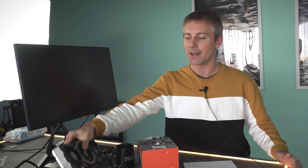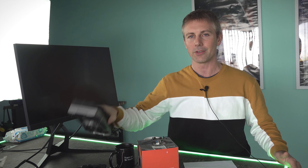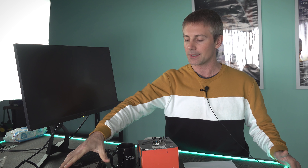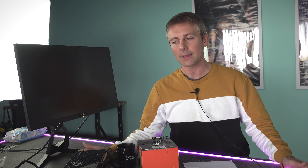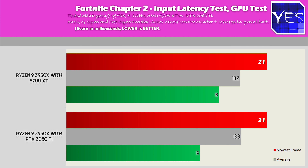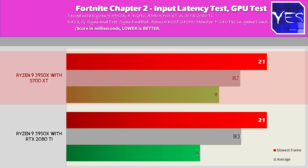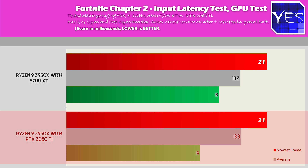What about graphics cards? We've got the 2080 Ti and the 5700 XT. I decided to rerun the tests on the 3950X because it has PCIe 4.0, so no complaints about not testing on the AMD system. In Fortnite, we got an average of 18.3 versus 18.2 milliseconds — virtually no difference between these two GPUs in terms of input latency. The best frame was two milliseconds lower at 14 versus 16, so the Nvidia did score the lowest frame in Fortnite on the 3950X versus the 5700 XT.